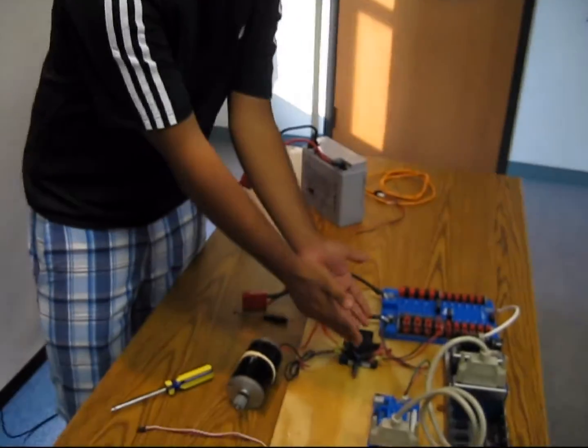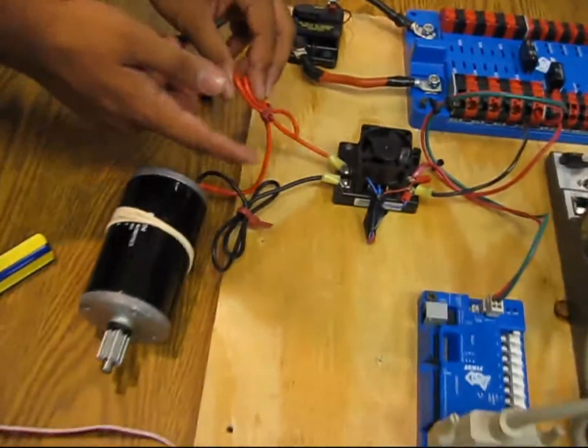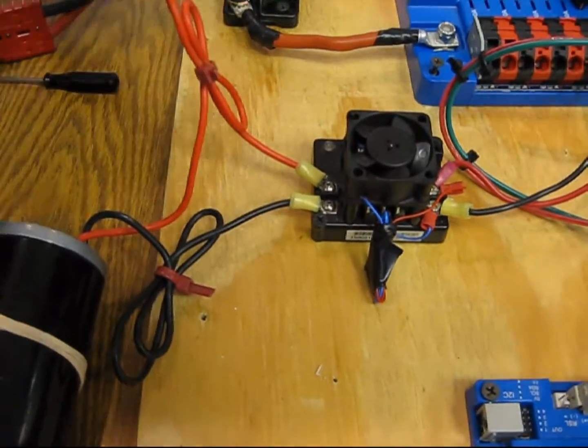Next, we have the motor connecting to the victor. All I have to do is plug the red to the positive and the black to the negative. The end.